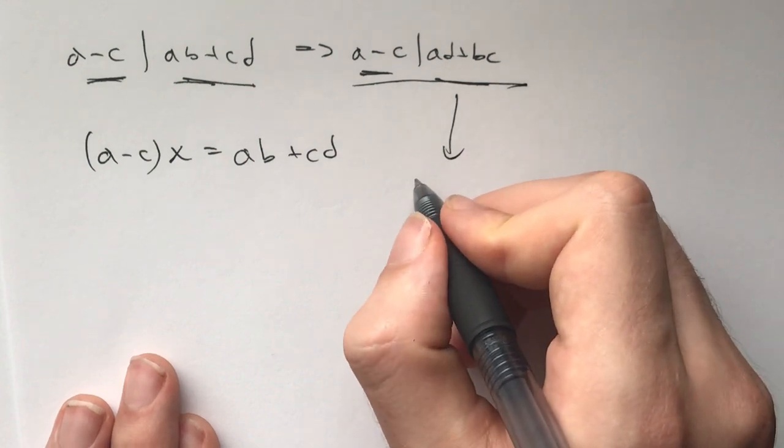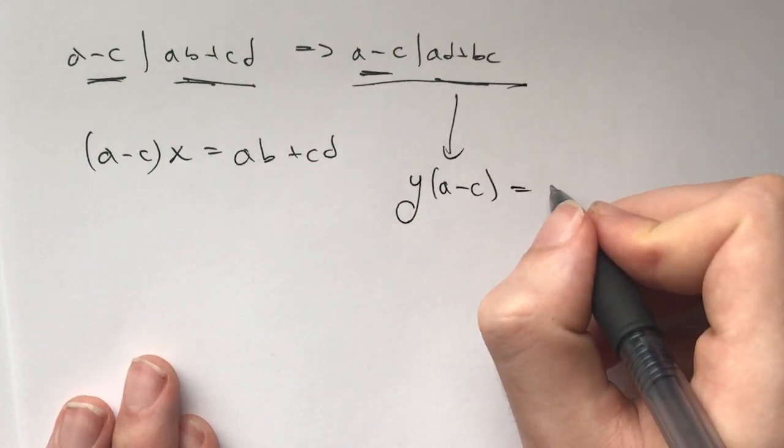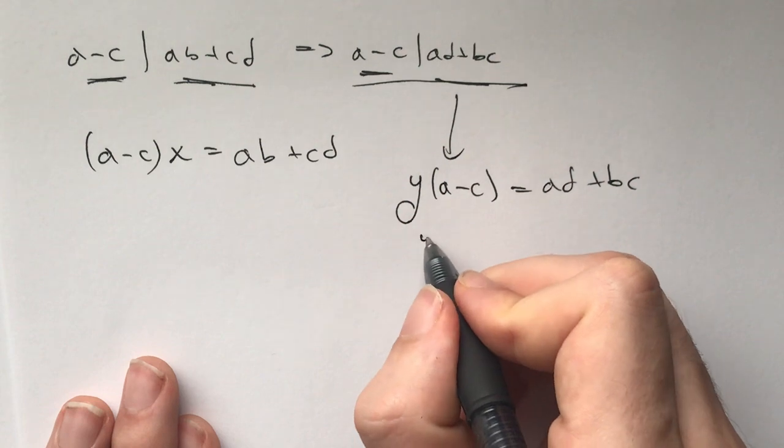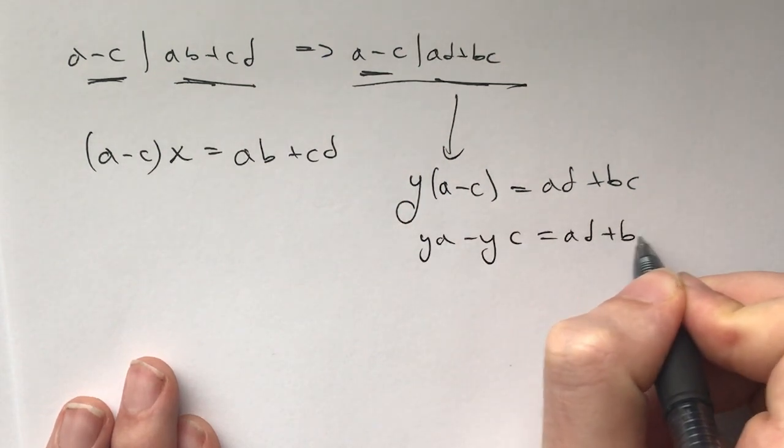What does it mean for (a-c) to divide this? Well it would mean that there exists an integer y such that y times (a-c) is ad plus bc. So now this is ya minus yc equals ad plus bc.